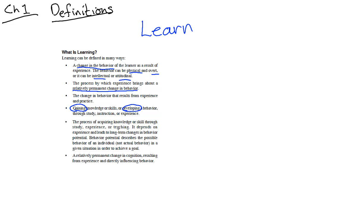Learning is a process by which a relatively permanent change in behavior is made—the change in behavior that results from experience and practice. Gaining knowledge—they used a verb there, that's important. Developing, that's pretty good. The process of acquiring knowledge or skill through study, experience, or teaching. Notice this one has a lot of conditions on whether or not something's been learned.